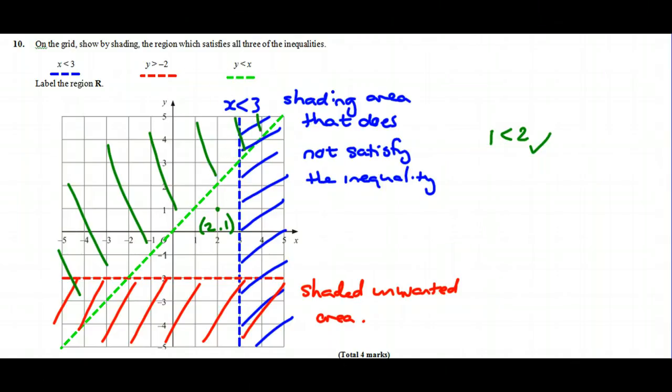So, our final part is to label the region R and you'll see that we're left with this bit here and this is the part we'll need to label R.